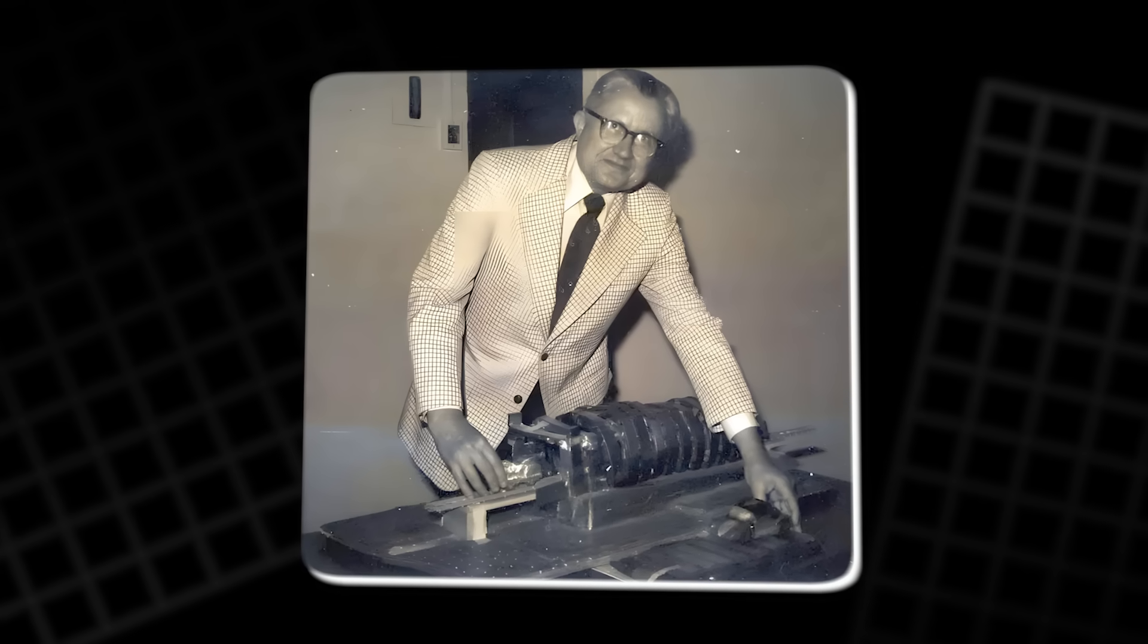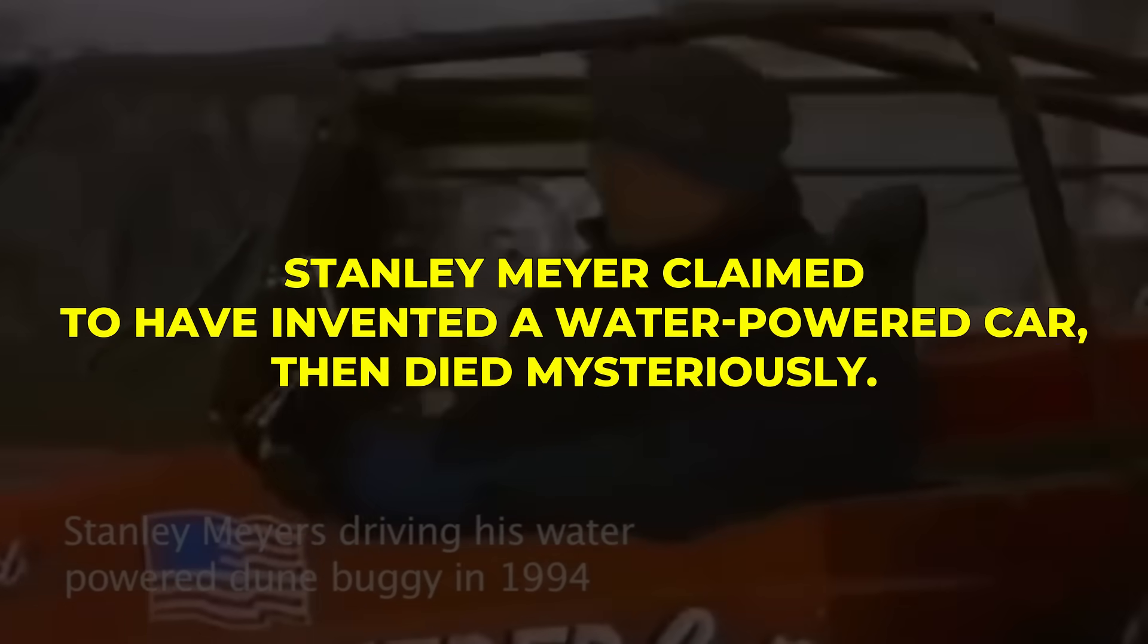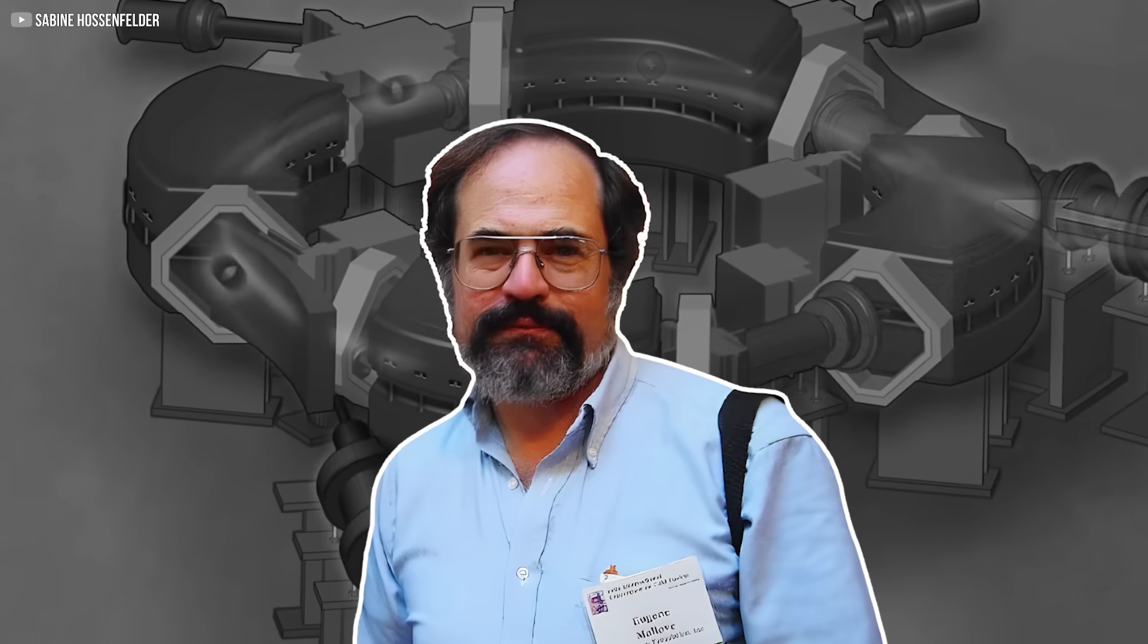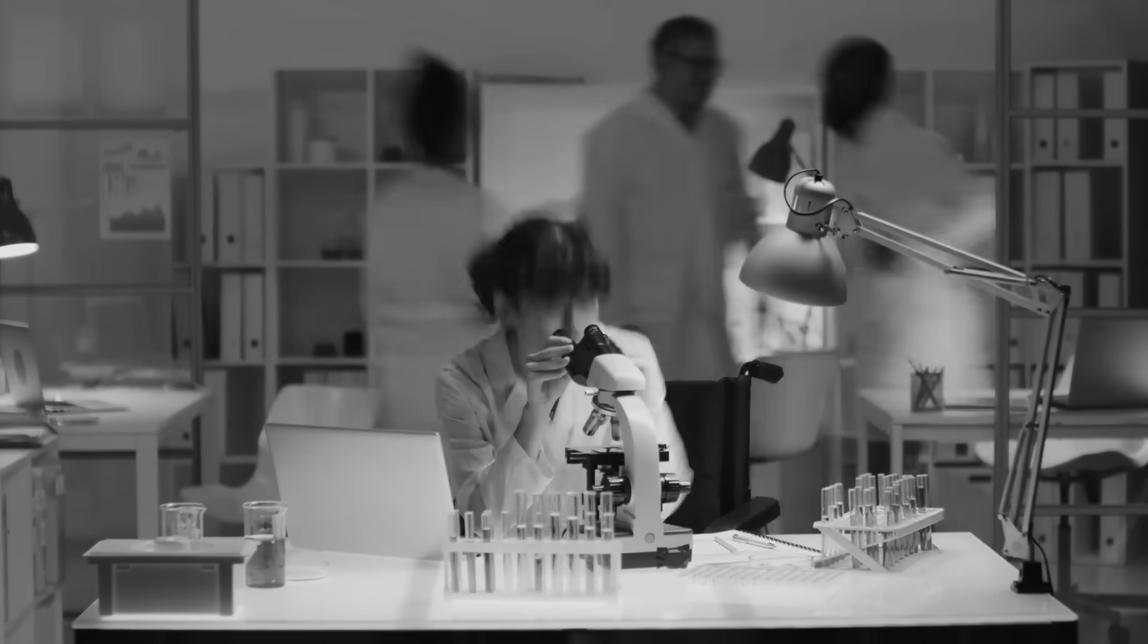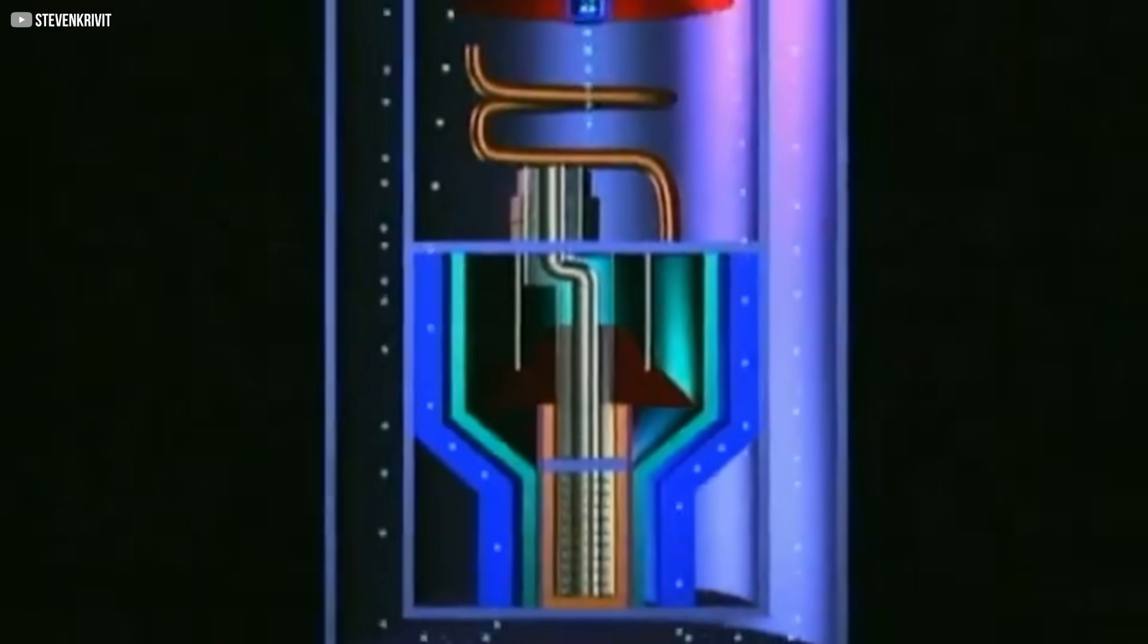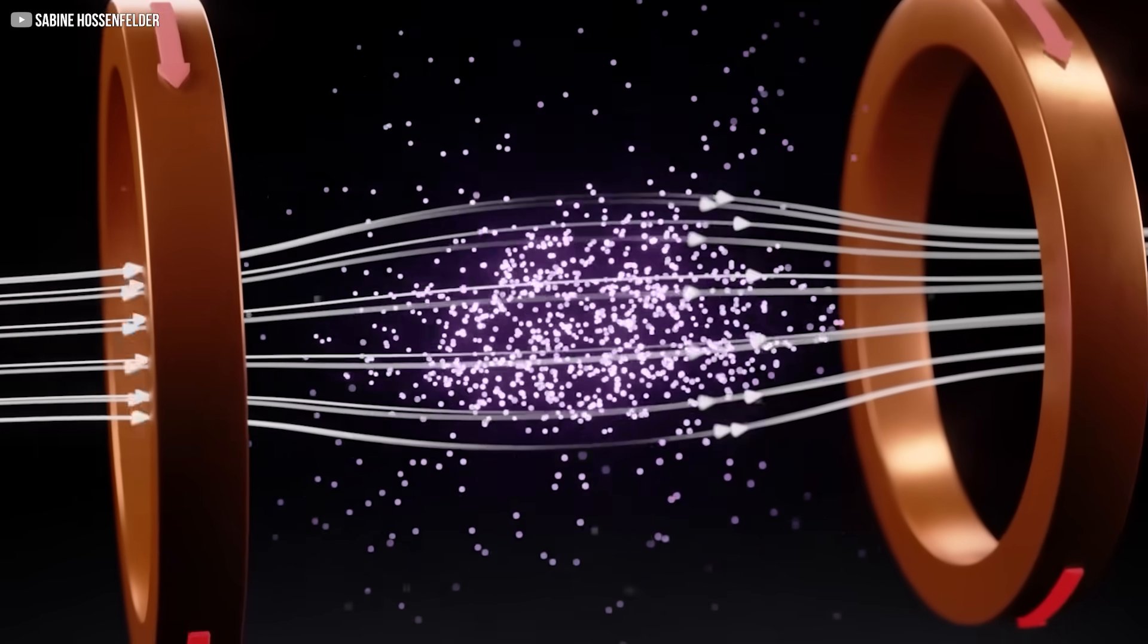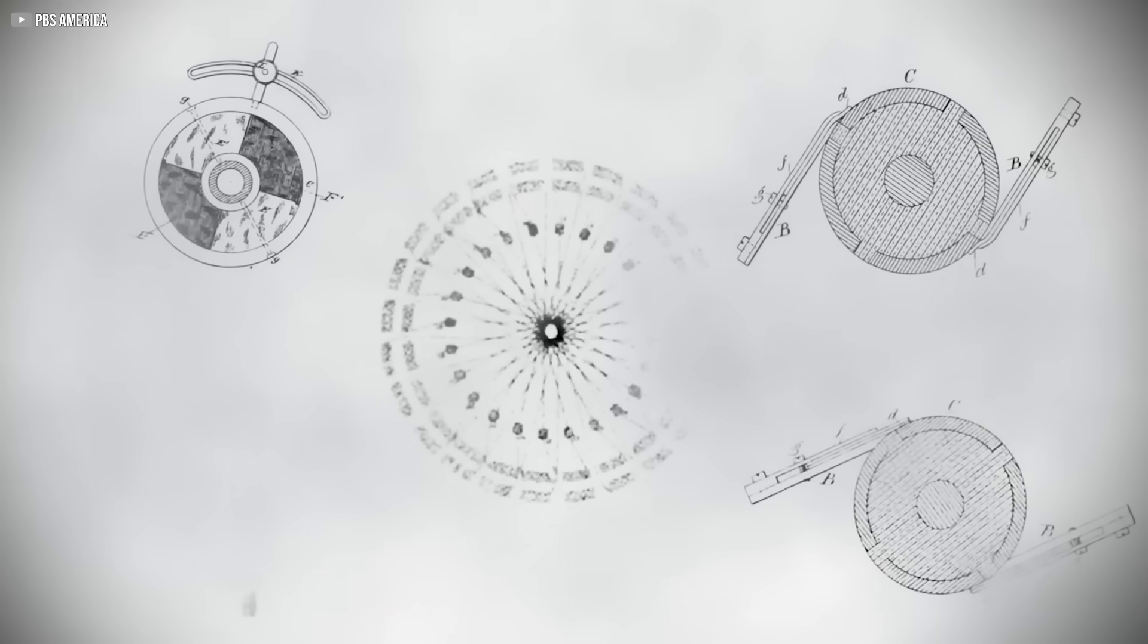Johnson wasn't the only one. Stanley Meyer claimed to have invented a water-powered car, then died mysteriously. Eugene Mallove, who defended cold fusion research, was murdered. John Hutchison's lab was raided, and his research was confiscated. These aren't conspiracy theories. They're patterns. Every time a new energy breakthrough threatens to upend the current system, it disappears one way or another.